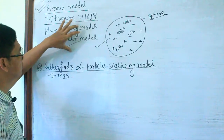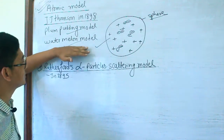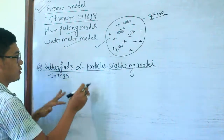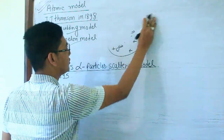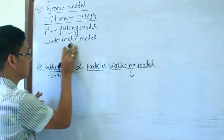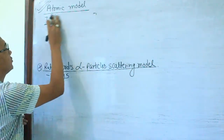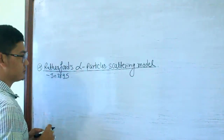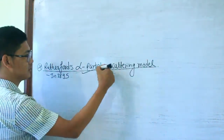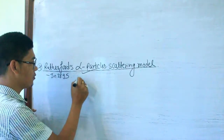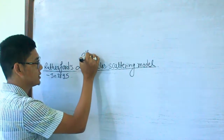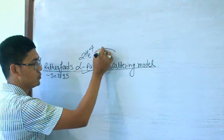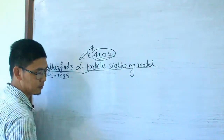J.J. Thomson proposed this model a very long time ago. Now, the first experiment we are going to discuss is alpha particle scattering. Alpha particles are created as 2H with atomic mass 4 — 4 atomic mass units (4 AMU).